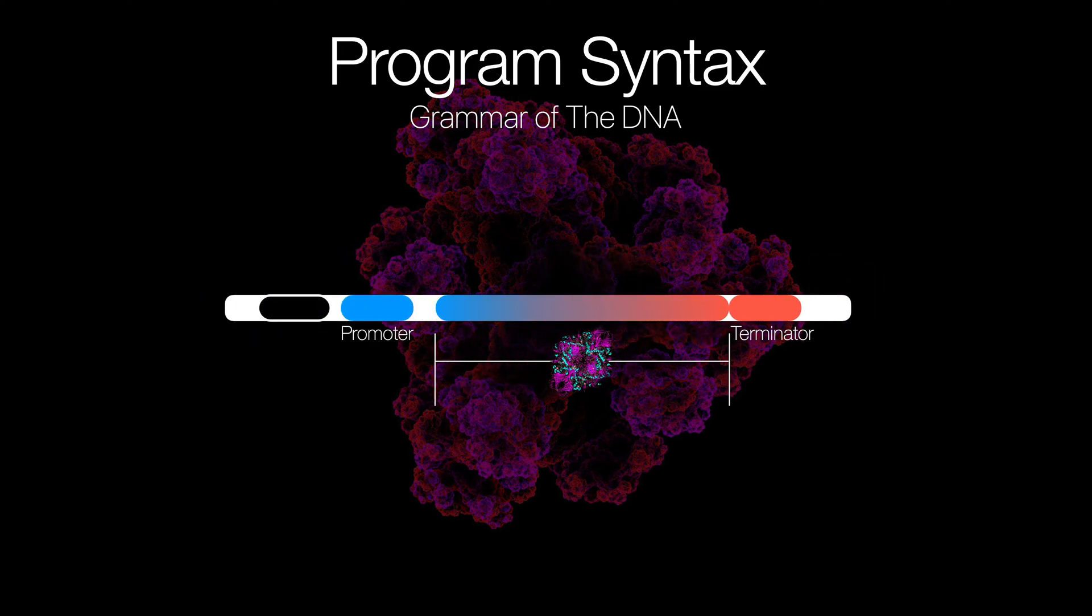Now, there's something that does the complete opposite to repressors. Certain promoters can be not as good of a landing pad as others. They can be designed to be harder for polymerases to hang on to. And more often than not, these types of promoters will have their polymerases falling right off before they can even transcribe anything. What we can do about it is add something called an enhancer.